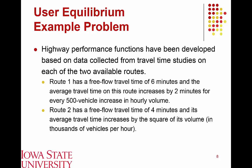This is best demonstrated through an example problem. We examine the travel times on two routes between a specific origin and destination. Route 1 has a free flow travel time of six minutes — if there is no traffic, we can get from point A to point B in six minutes — and that travel time increases by two minutes for every 500-vehicle increase in hourly volume. Route 2 provides a superior free flow travel time of four minutes, but its travel time increases more rapidly as a function of the square of its volume in thousands of vehicles per hour.